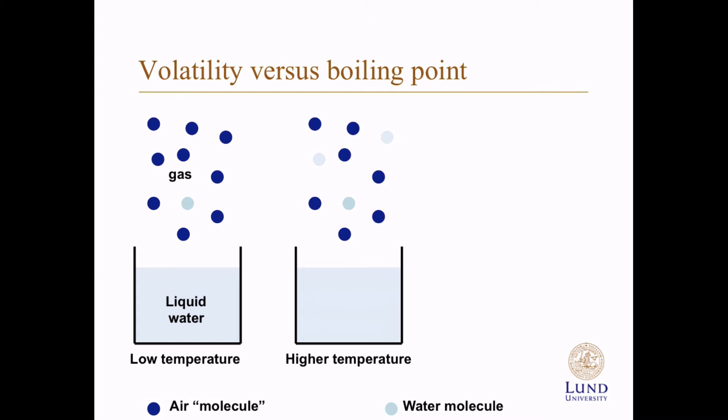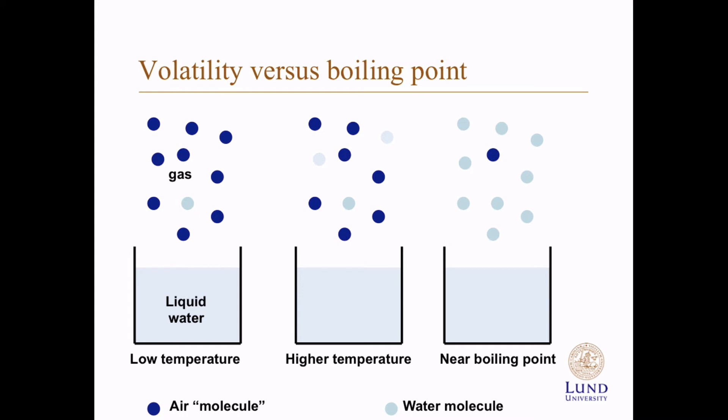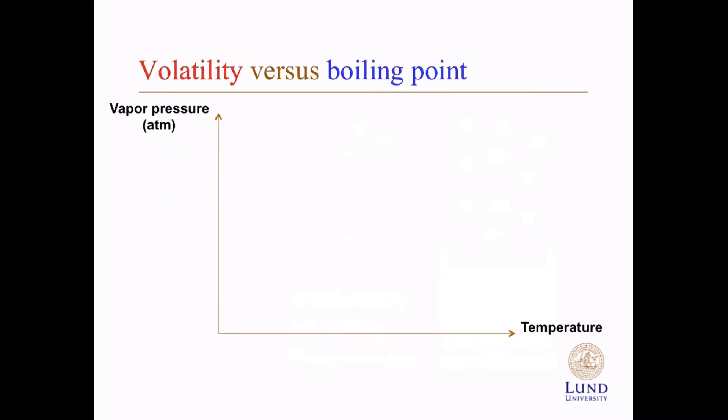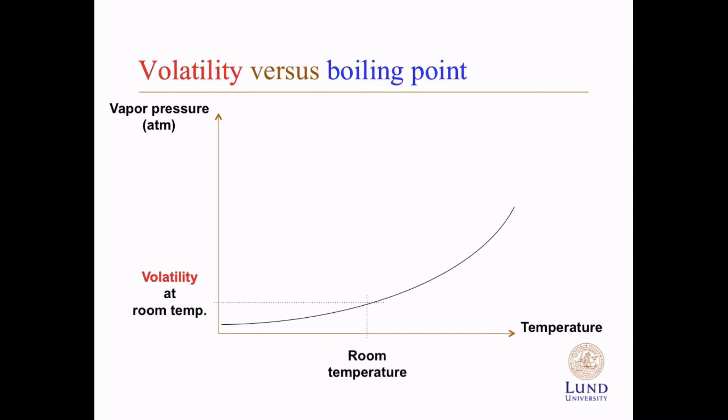If you increase the temperature, this fraction increases in the gas above, and when it's near boiling point, nearly all the molecules are water molecules. This is the vapor pressure, and the vapor pressure increases with temperature. At room temperature we have a certain volatility of a substance. The boiling point is defined as the point at which the vapor pressure of the substance is one atmosphere.